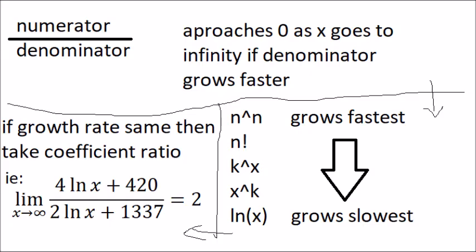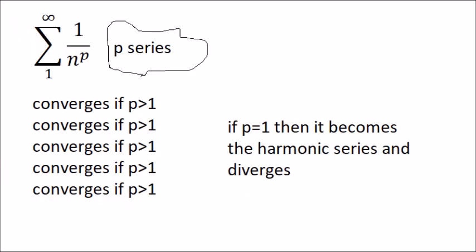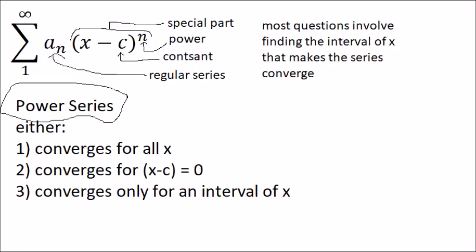If the denominator grows faster, then it will most likely converge down to 0, and you should know that n to the n grows the fastest, while ln x grows the slowest. The power series is 1 over n to the p, and it always converges if p is greater than 1. The power series is just your basic series, but it has an x minus c to the n component. It either converges for all x, converges only for x equals c, or converges on a certain interval of x.